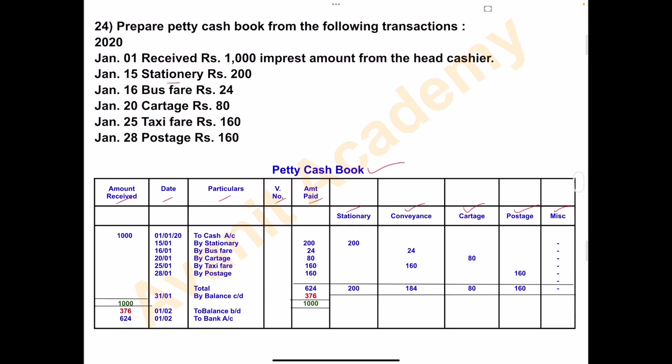On 1st January 2020, the petty cashier received Rs. 1000 as imprest amount from the head cashier. So in the amount received column, write Rs. 1000. Date: 1st January. Particulars: to cash account.